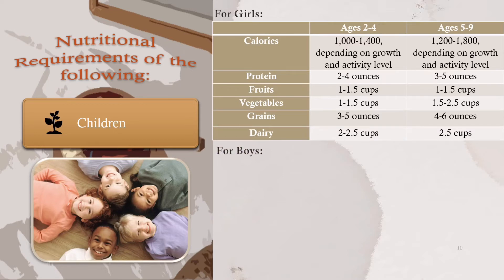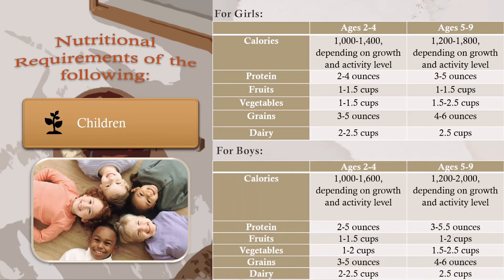For boys: The nutrients required are calories, protein, fruits, vegetables, grains, and dairy. The side tables show the RDA for ages 2 to 4 and ages 5 to 9.